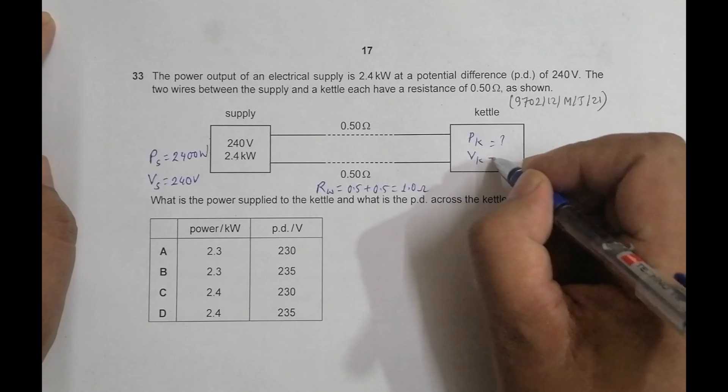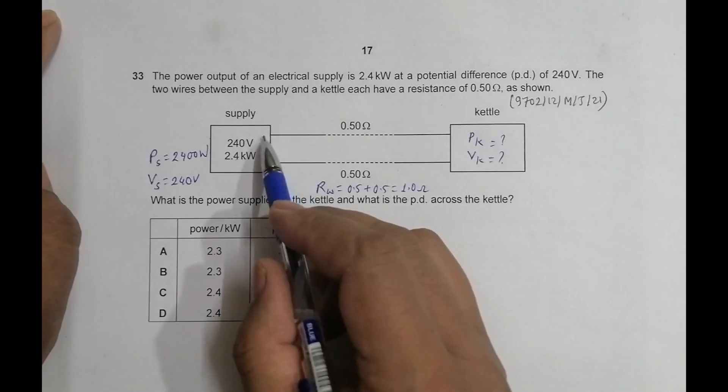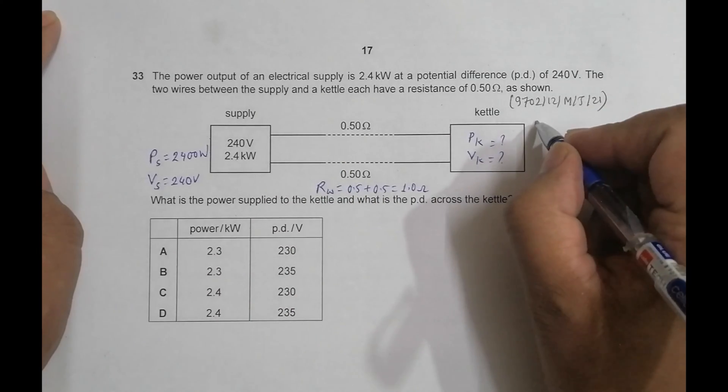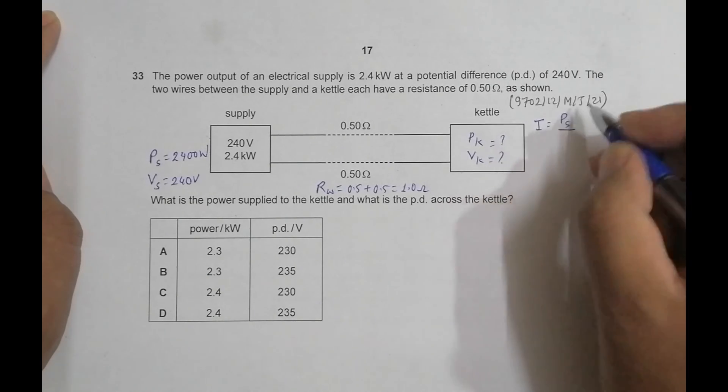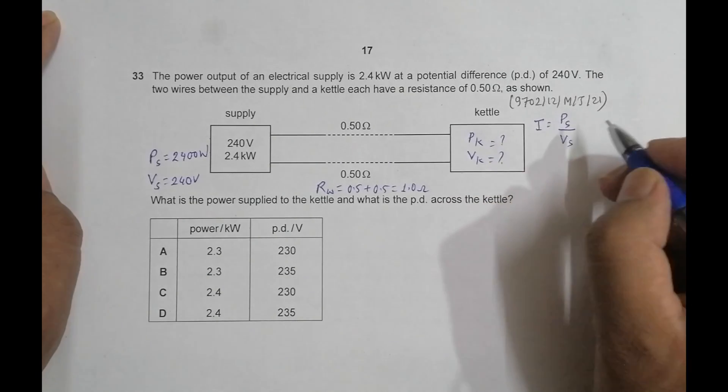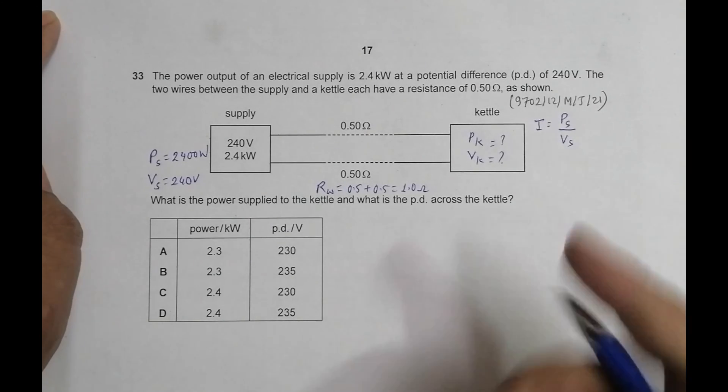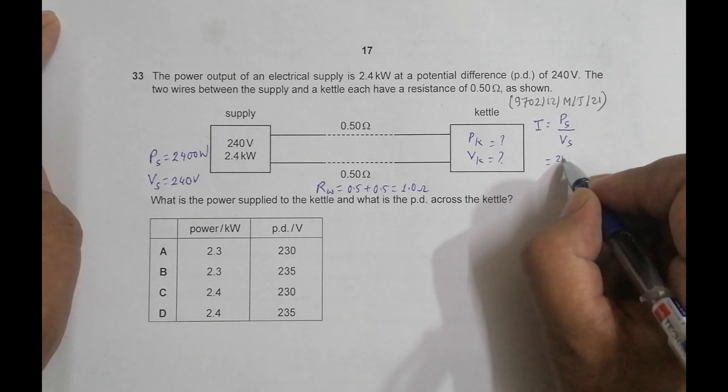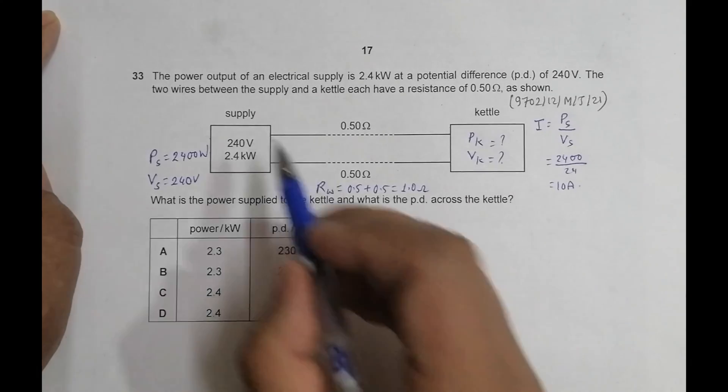The first approach will be to find the current that it supplies. So the current is equal to power supplied by the supply divided by voltage across the supply. Power equals IV, so I equals power by V. That gives us 2400 by 240, equal to 10 amperes.